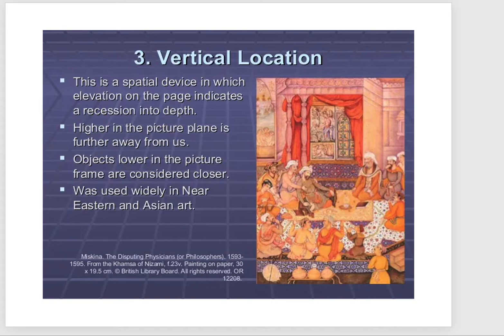One other way to describe the illusion of space is to use something called vertical location. Basically that means you're sort of hovering above — it's a scene that depicts an open space, usually incorporating architecture, where your viewpoint is actually elevated. It sort of appears as though you're on a ladder looking down at the scene. This tends to work really well because it's very easy to depict a lot of a scene while moving far back into the distance, and it usually incorporates one- or two-point perspective.